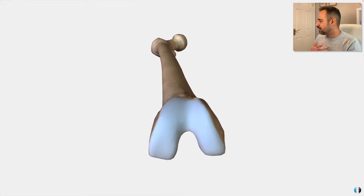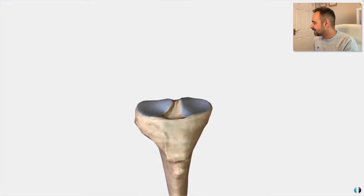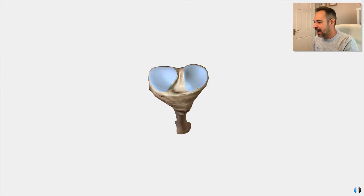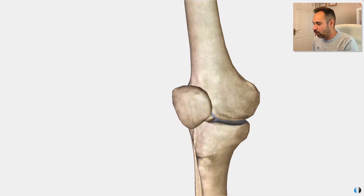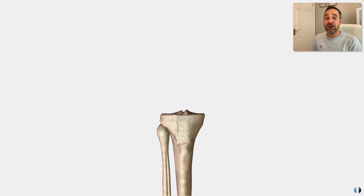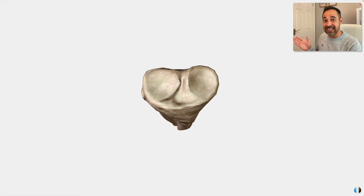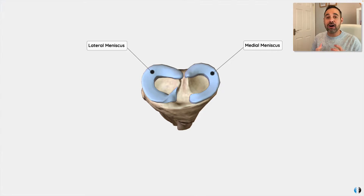The hyaline cartilage lines the femur, the tibia, and the back of the patella which articulates with the femur for the patellofemoral joint. The other really key soft tissue structures are the menisci of the knee. Looking at the knee from a top-down view directly at the tibia, we can see two half crescent-shaped structures which are the menisci.